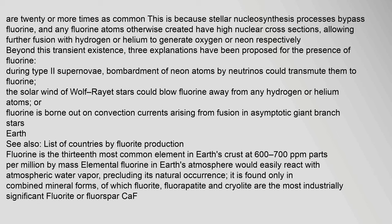Three explanations have been proposed for the presence of fluorine. During type 2 supernovae, bombardment of neon atoms by neutrinos could transmute them to fluorine. The solar wind of Wolf-Rayet stars could blow fluorine away from any hydrogen or helium atoms. Or fluorine may be borne out on convection currents arising from fusion in asymptotic giant branch stars. Fluorine is the 13th most common element in Earth's crust at 600–700 ppm.